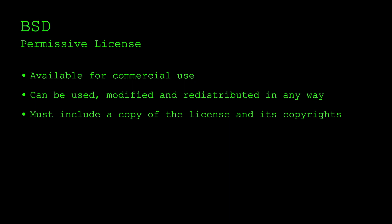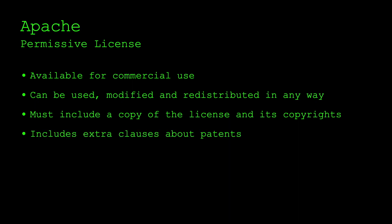The BSD license is very similar to the MIT. It's also available for commercial use and can be used, modified, and redistributed in any way, and must include a copy of the license and its copyrights. The Apache license is also very similar to MIT and BSD but is preferred by a lot of people. It has the same terms except it includes extra clauses about patents, so if you're interested you can do a bit more research — it's quite widely used.